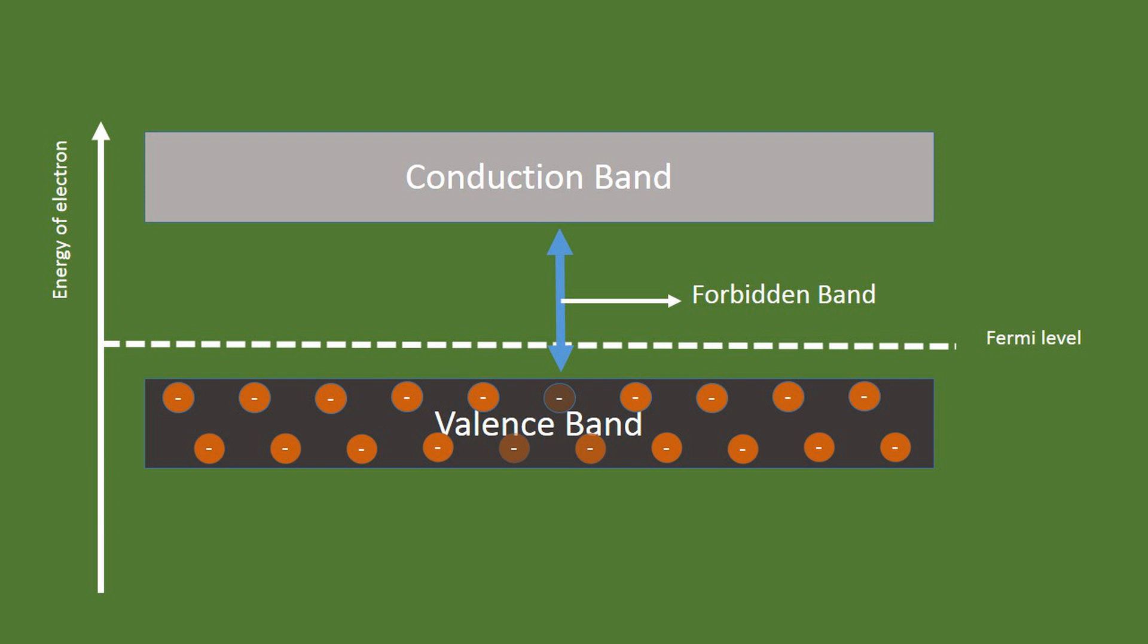Between the valence and conduction band is a forbidden band, which is also known as the band gap.